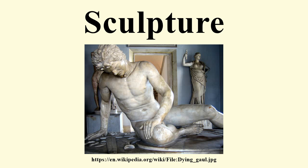Pointing involved setting up a grid of string squares on a wooden frame surrounding the original, and then measuring the position on the grid and the distance between grid and statue of a series of individual points, and then using this information to carve into the block from which the copy is made.